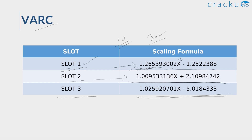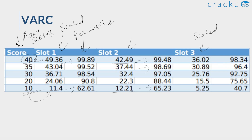Looking at the scaled scores for Slot 3 based on this formula: since Slot 3 VARC was on the easier side compared to the other slots, after scaling the marks have actually gone down. If you scored 40, the final scaled score was 36, and if your raw score was 10, the scaled score was 5. These are the respective percentiles for these scores.